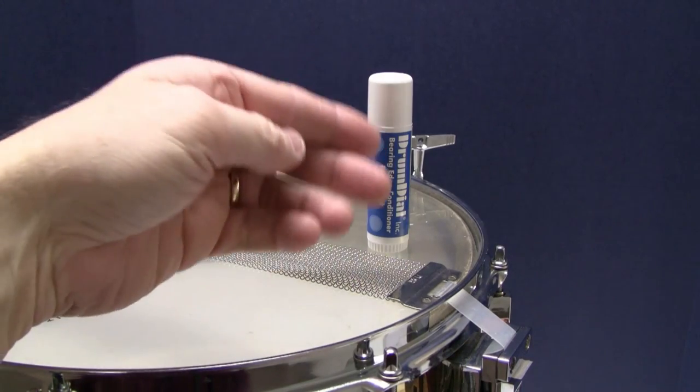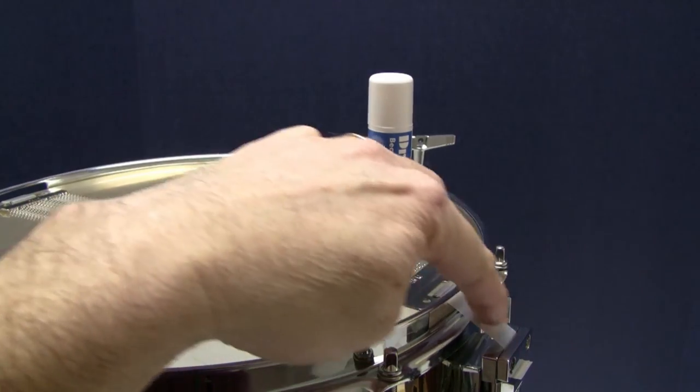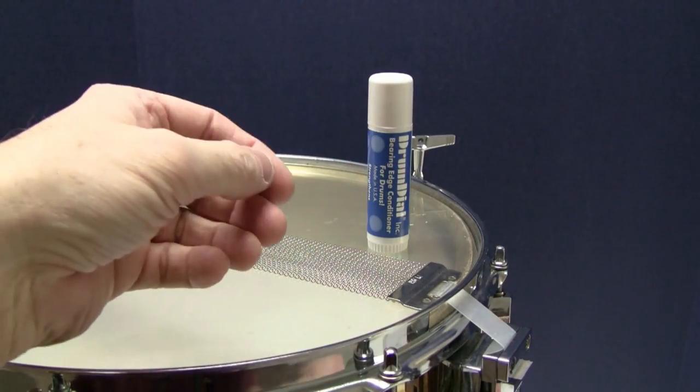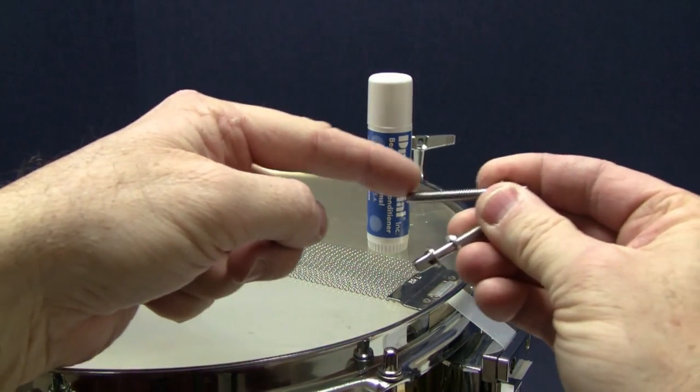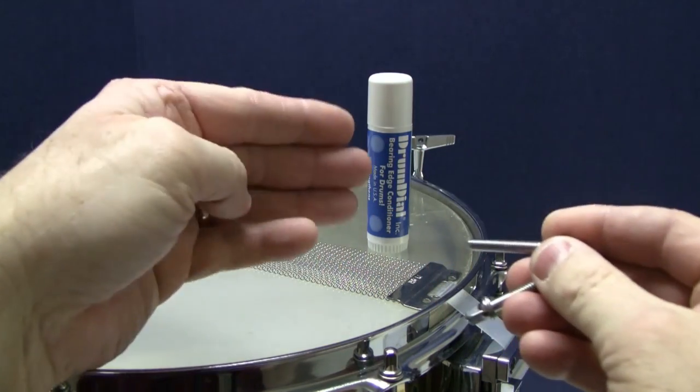Drum dial bearing edge conditioner is for all high pressure drum applications. Use it on snare straps and snare strap contact points. Also works great on screws and lugs. And remember, safe for all types of plastic, wood, and metals.